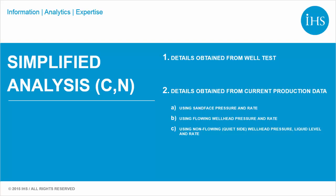By using the production data method, there are three options: using sand phase pressure and rate, using flowing well head pressure and rate, and using non-flowing well head pressure, liquid level and rate. All three use the same logic, but differ in the way that flowing well pressure is entered.